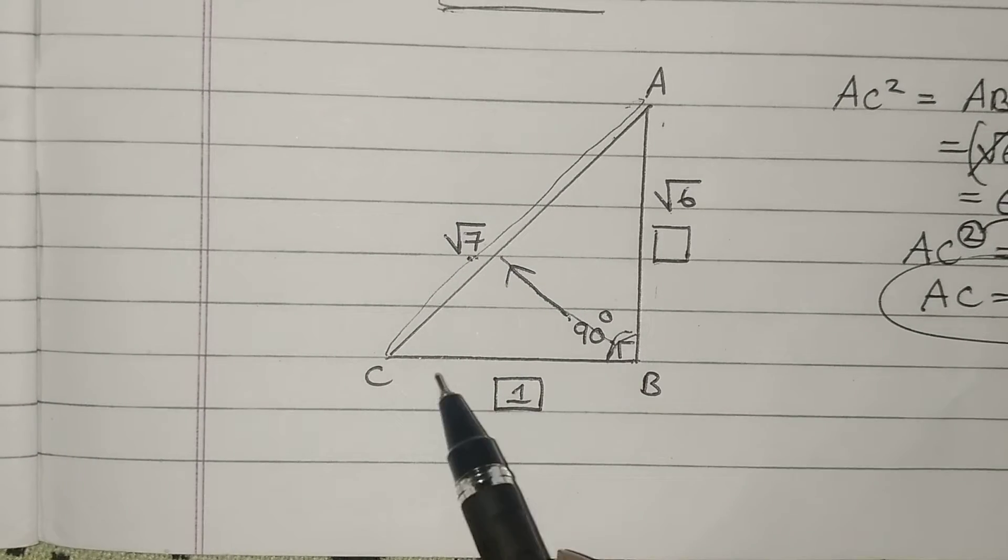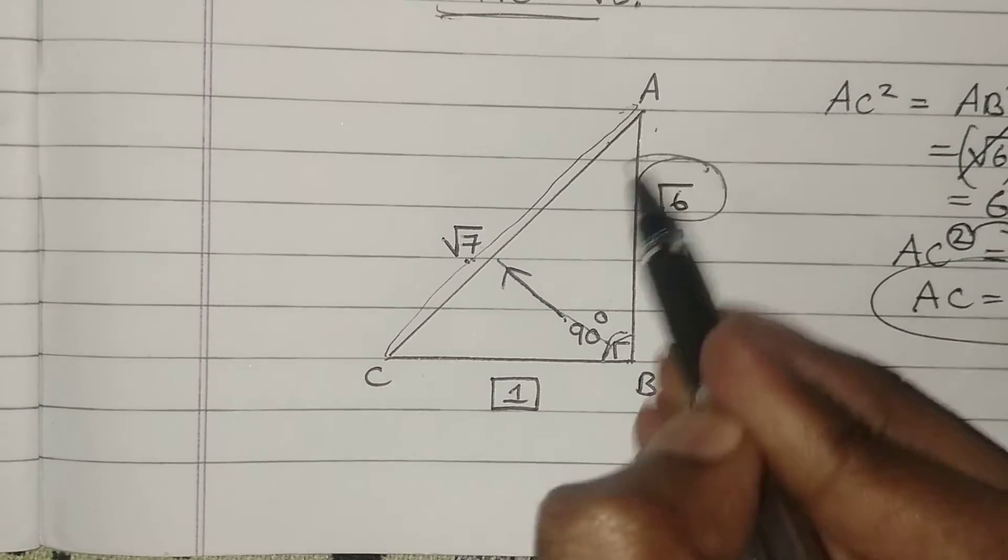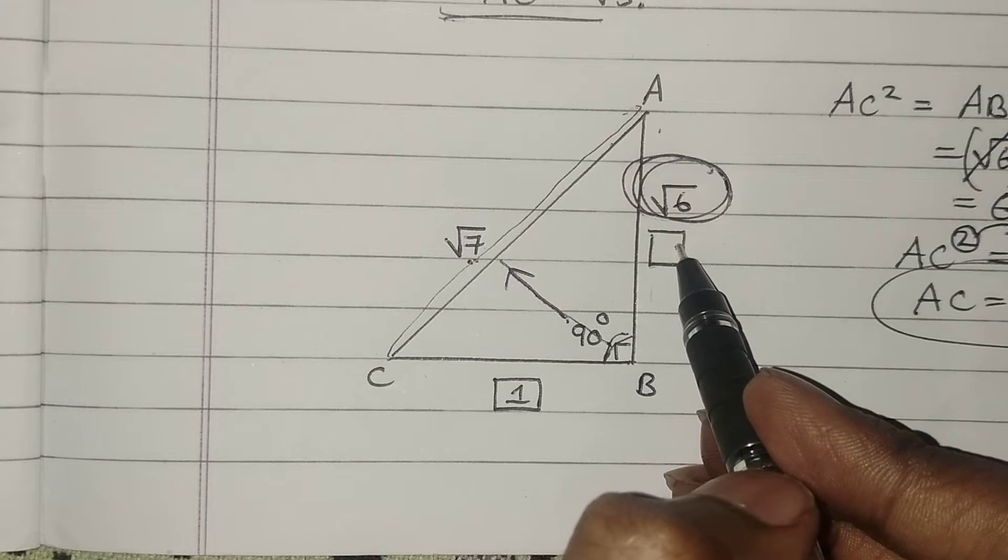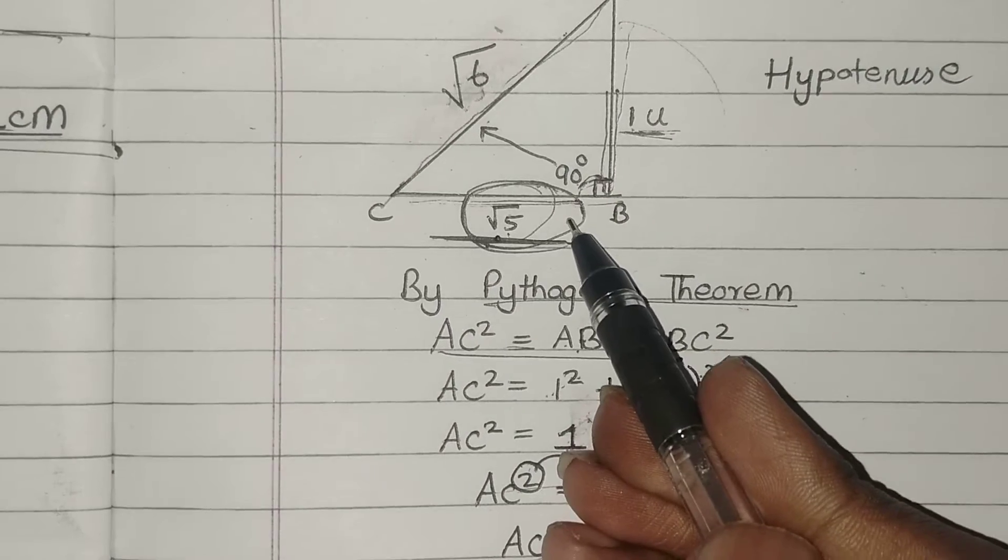So firstly, I have to locate or construct this root 6 on the number line. For that, I have to make use of this concept. Correct? No.